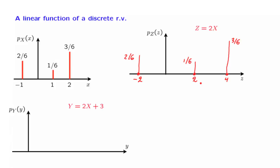Let us now consider the random variable y defined as 2x plus 3, or equivalently z plus 3. With probability 2 sixths, z equals minus 2, and in that case y equals plus 1. With probability 1 over 6, z takes a value of 2, so y takes a value of 5. And finally, with probability 3 over 6, z takes a value of 4, so y takes a value of 7. The PMF of y has exactly the same shape as the PMF of z, except that it is shifted to the right by 3.